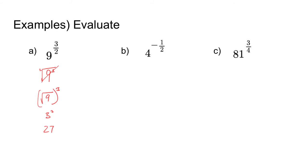What about 4 to the negative 1 half power? Remember that when you raise any value to a negative exponent, that means put it on the denominator. So this really means 1 over 4 to the 1 half power. We can rewrite it by putting the negative exponent on the denominator of the fraction. And remember, 4 to the 1 half power is just like taking the square root of 4. The square root of 4 is 2, so 4 to the negative 1 half power is the same thing as 1 half.